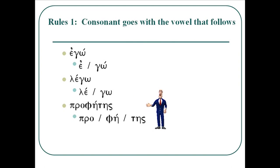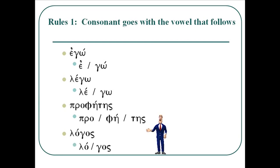Similarly, profetas: the p-rho-omicron go together — you see the p-rho consonant cluster on the beginning — and then phi-eta go together, because phi is a consonant and goes with the vowel that follows it, and the tau goes with the eta and the sigma. Similarly, with logos: lambda goes with the omicron, there's a break, because the gamma goes with the omicron that follows it, so it's lo-gos.